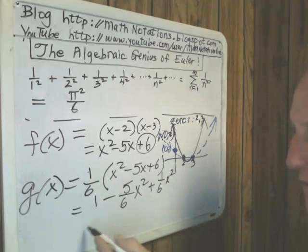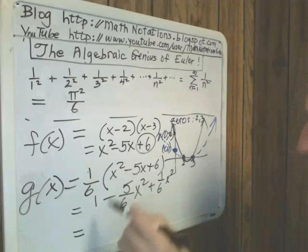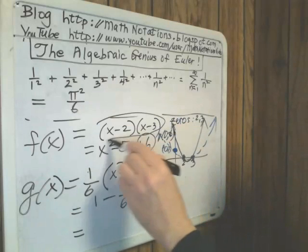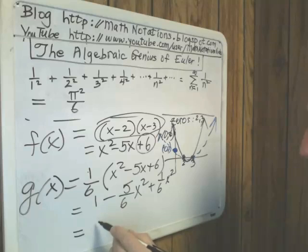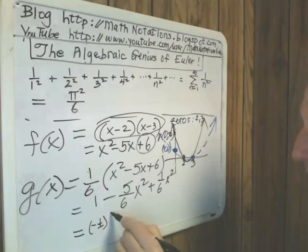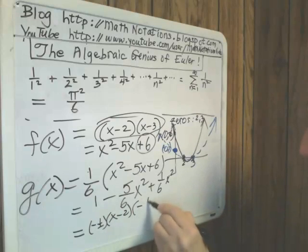We could also write this in factored form, which I could get directly from the original one. If I multiply the first factor by negative one-half and the second factor by negative one-third